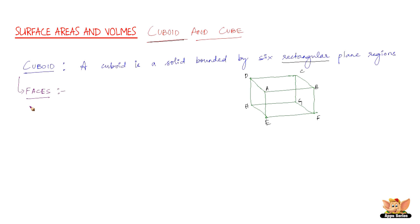Let me just mention all the faces here: ABCD is one, EFGH is another, AEHD is another, CGFB is another, AFB is another, and CDHG is another. So that makes six faces in total.